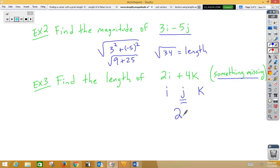So we need to think about this as 2i plus 0j plus 4k. Now if we want to norm that, we've got two squared plus zero squared plus four squared.